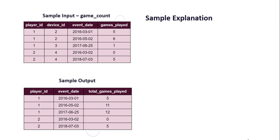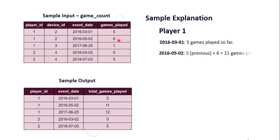For player_id 1, on event date 2016-03-01, he has played 5 games so far. For the same player on 2016-05-02, he has played 11 games so far because we add the previous 5 games plus 6 games for the present date, totaling 11. Similarly, for 2017-06-25, this comes out to 12 games played so far for this player up till that date.